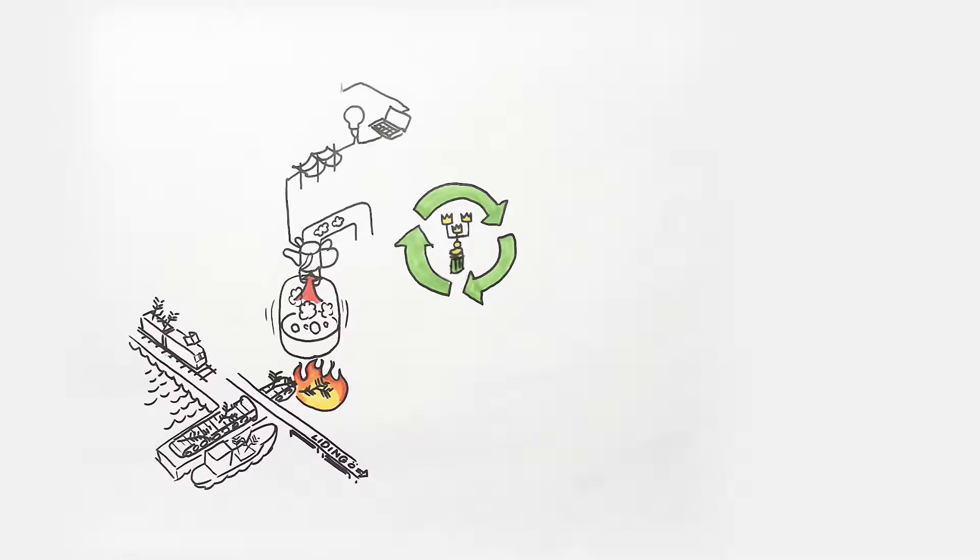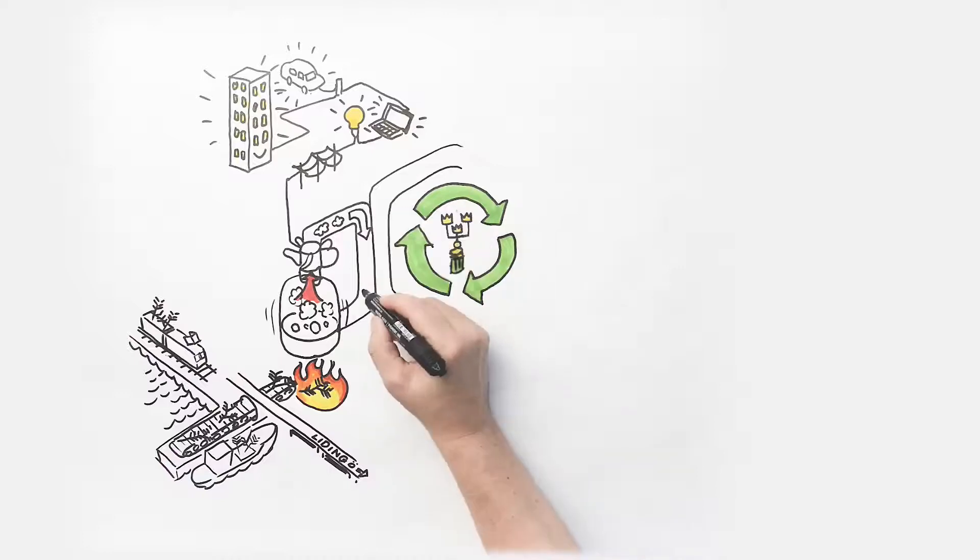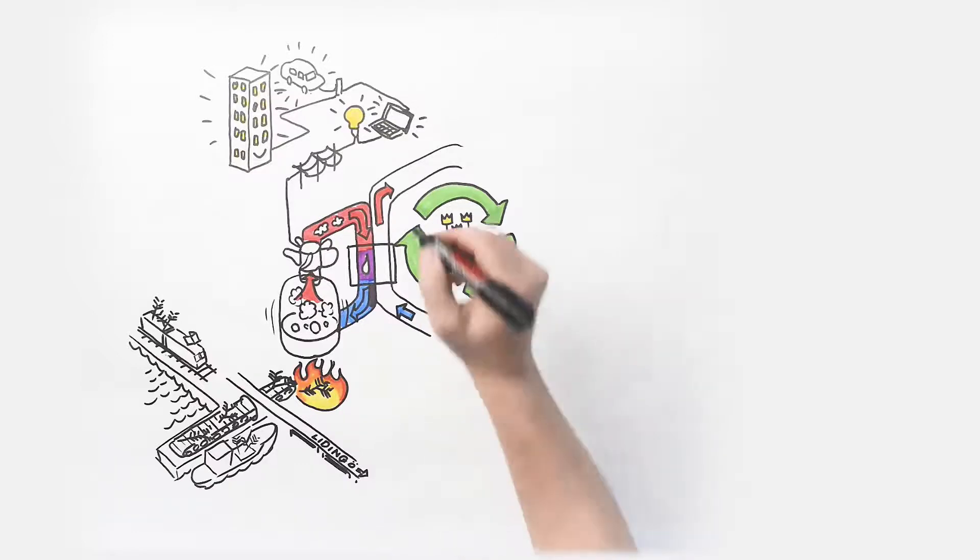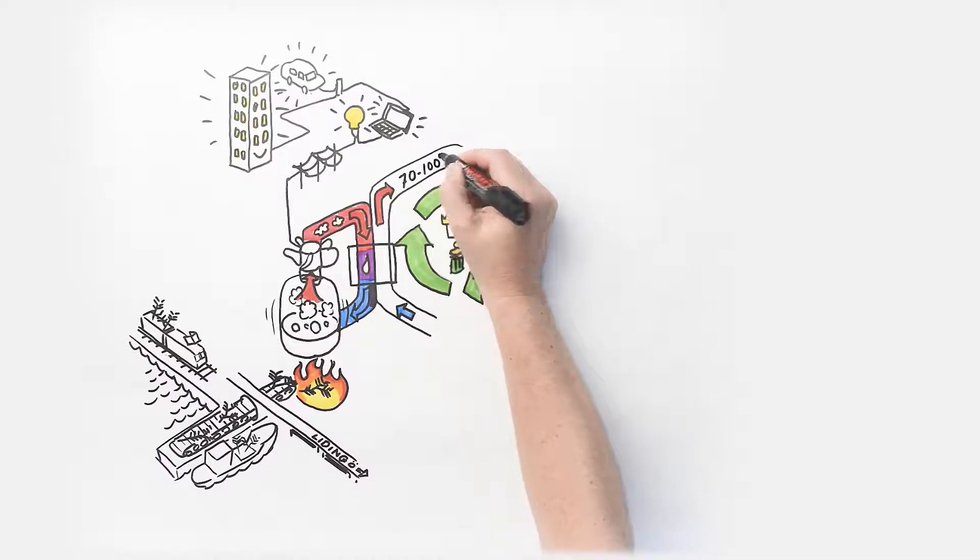The electricity that is generated is distributed into the electrical grid. But the steam continues its journey. It collides with a bunch of steel pipes in a heat exchanger. The steam has now heated up the water inside the pipes to a temperature of 70 to 100 degrees Celsius.